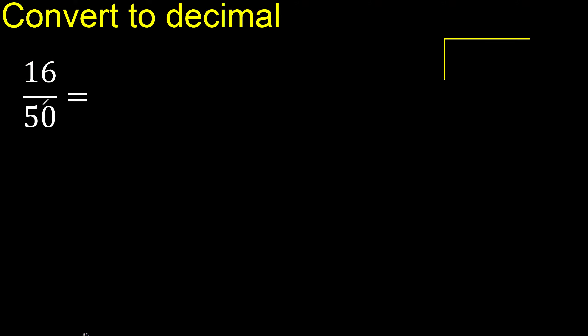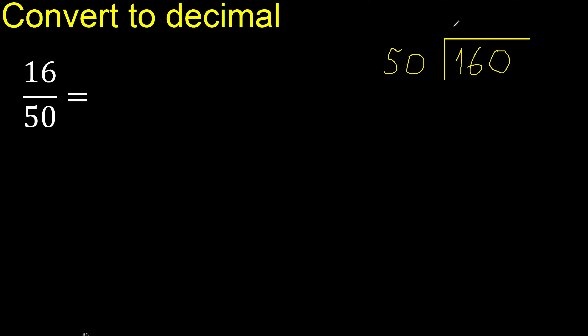16 divided by 50. 16 is less, therefore complete — always complete with 0.